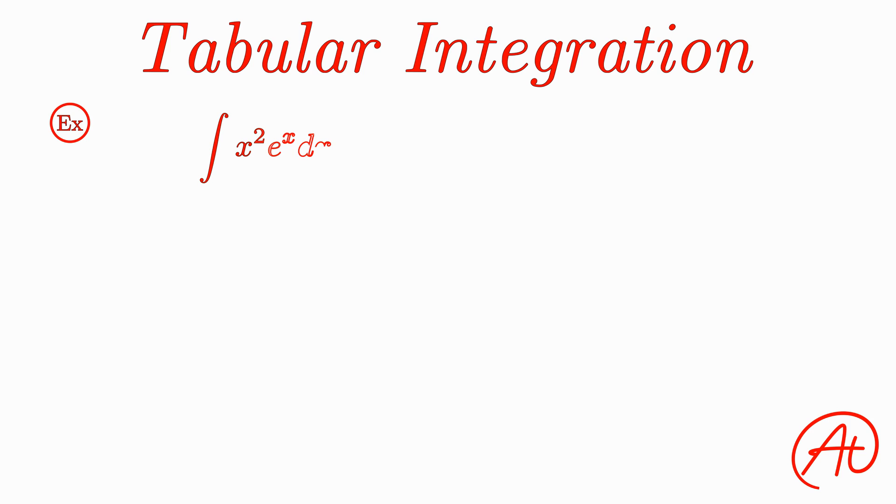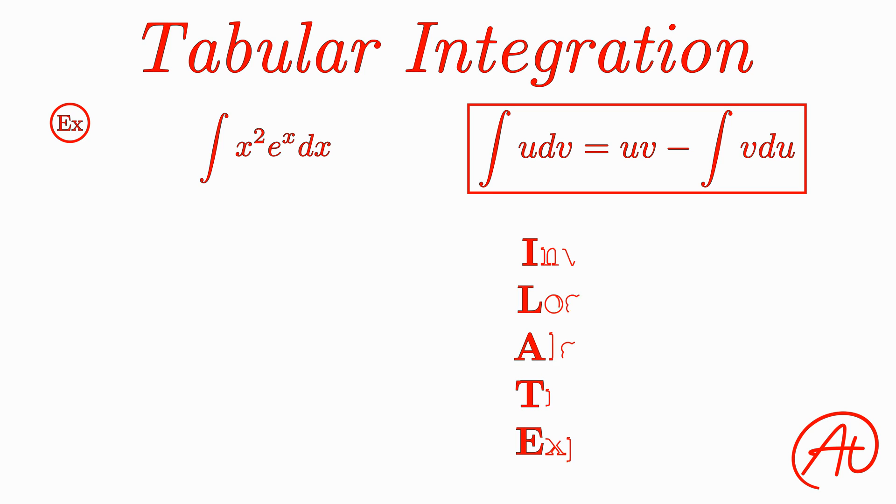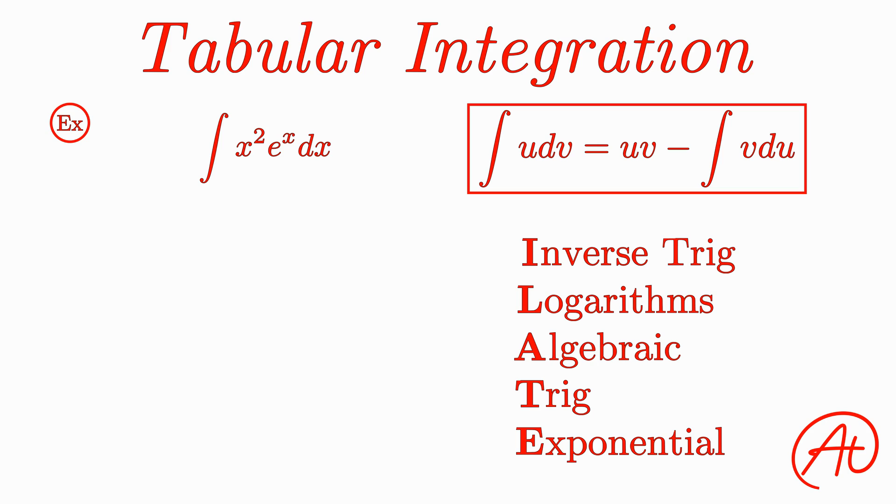Say we want to find the integral of x squared times e to the x. Well, when we have an integral in this form, we can use the integration by parts formula to solve it. And using our handy acronym, ILATE, as explained in our last video, we know that we should pick u to be x squared and dv to be e to the x dx.